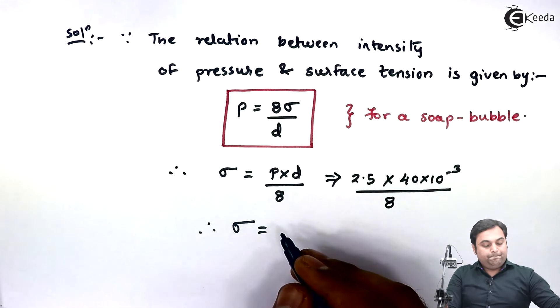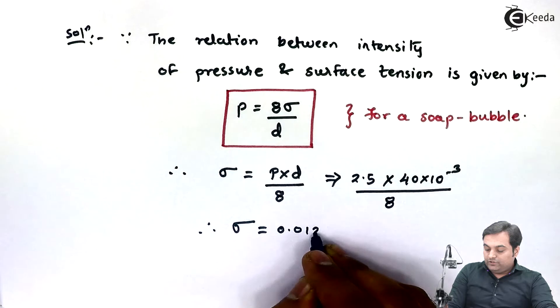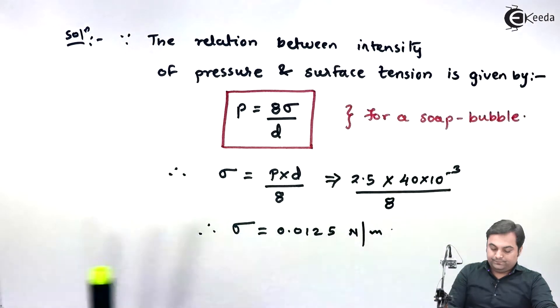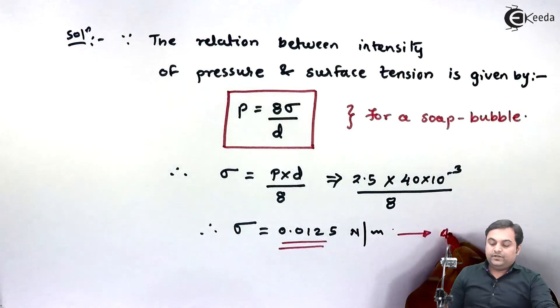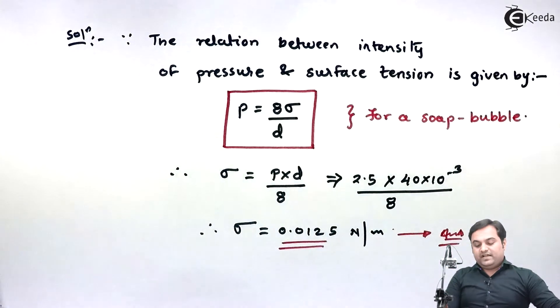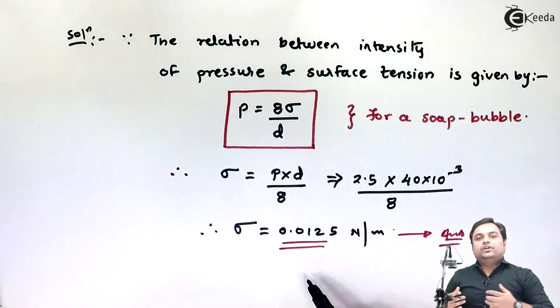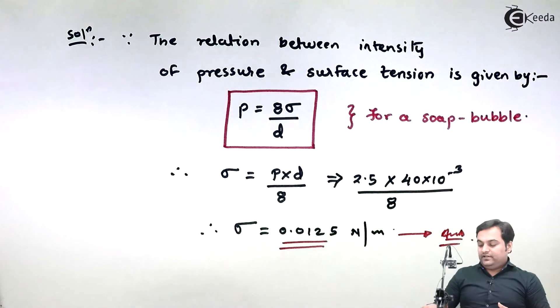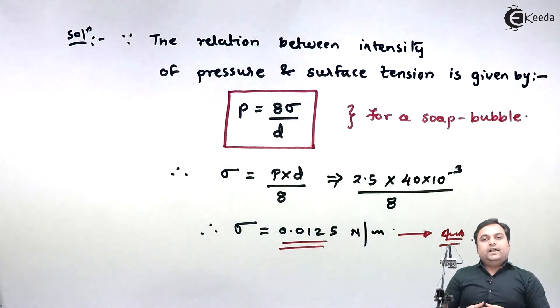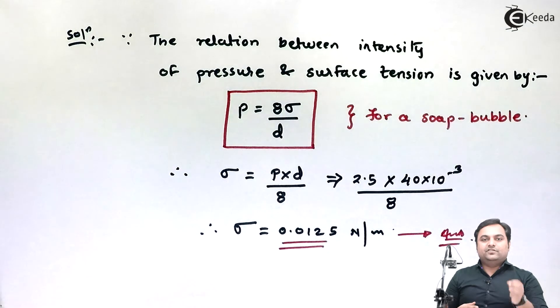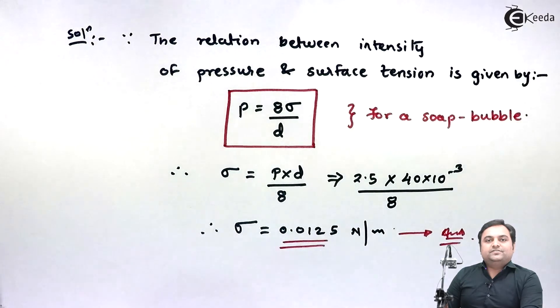0.0125 Newton per meter. This is the answer. It means the soap bubble we have is experiencing a surface tension—a tensile force acting over that soap bubble which tries to keep it in a stretched condition. That force is surface tension. The answer is 0.0125 Newton per meter, and with this we complete the problem.